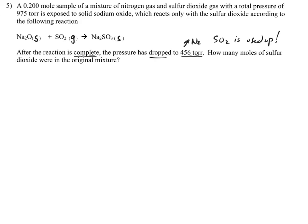How many moles of sulfur dioxide were in the original mixture? The 975 torr was from the N2 plus the SO2. It reacted completely and dropped to 456 torr, so that's going to be only the N2 that's left. What reacted is 519 torr, and that's the SO2 that reacted.